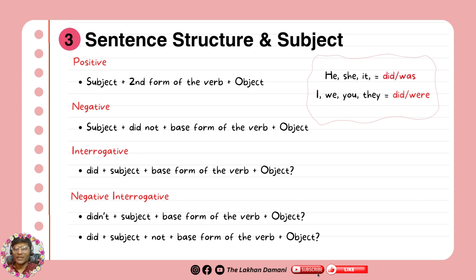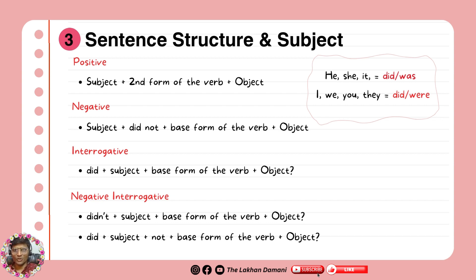For negative interrogative, there are two types. The first and more popular form: didn't you speak to him? — here the structure is did not + subject + first form + object + question mark. The other form: did you not talk to him? — that's more polite but less common. A lot of people use the first form informally. For subjects: he, she, it use did and was; I, we, you, they use did and were.